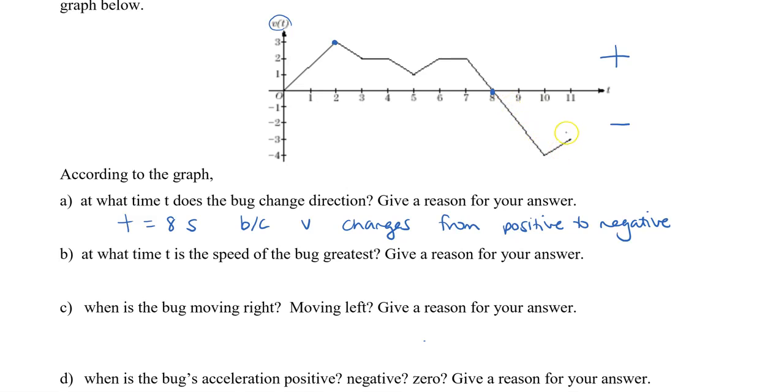However, when we take a look at the negative side, we can see the greatest velocity is negative 4 meters per second. But when we take the absolute value of that negative 4, we actually get positive 4. So, at t equals 10 seconds, it has the greatest speed.